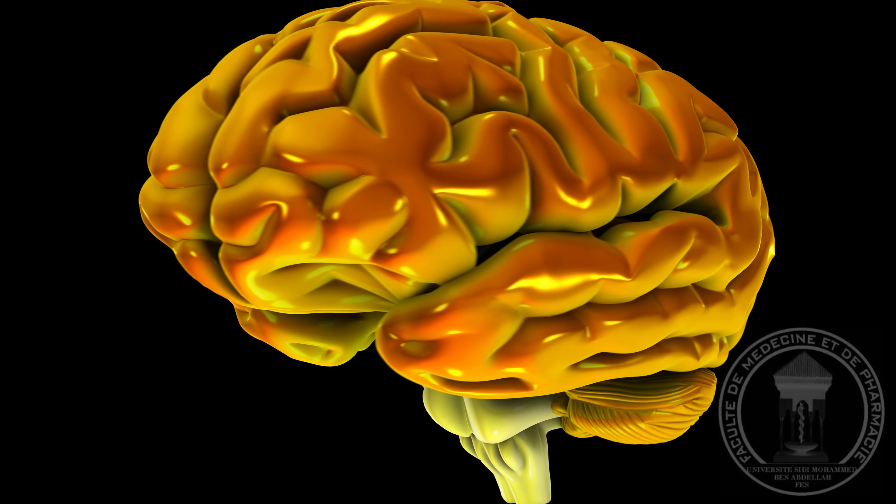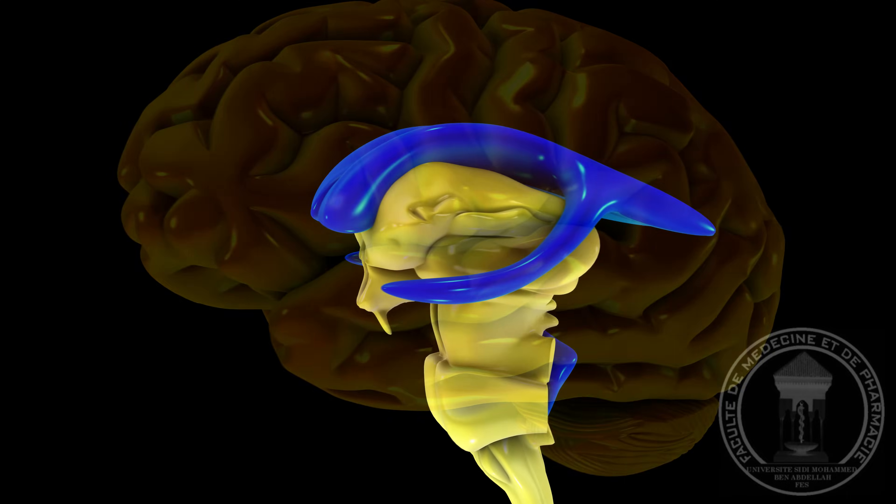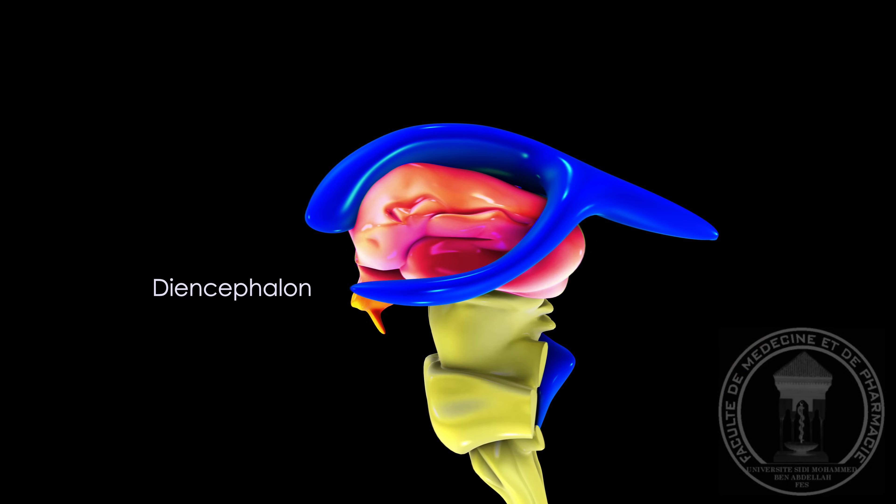Covered by the two cerebral hemispheres, the diencephalon is the structure of the central nervous system that is at the center of the brain. It contains masses of gray matter such as the thalamus and the hypothalamus that play tremendous roles in the organism.